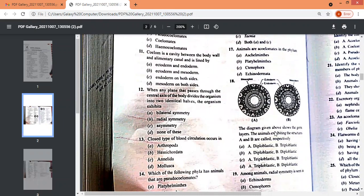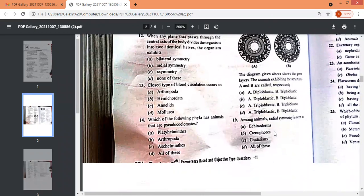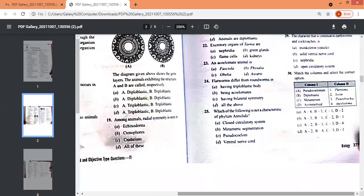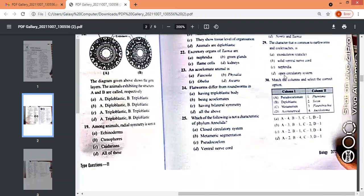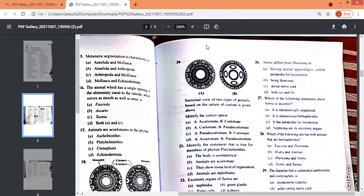So you can see properly. I'm just holding it over here. And then you come to nineteenth question among animals, radial symmetry, cnidarians, echinoderms. So this is there.